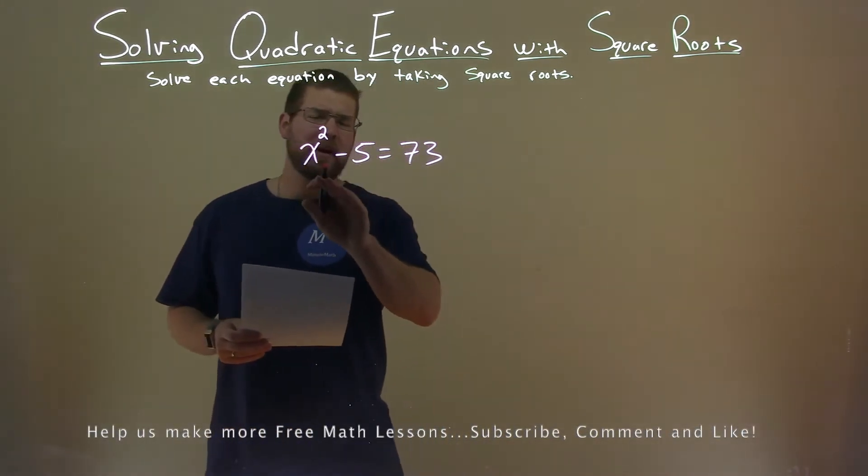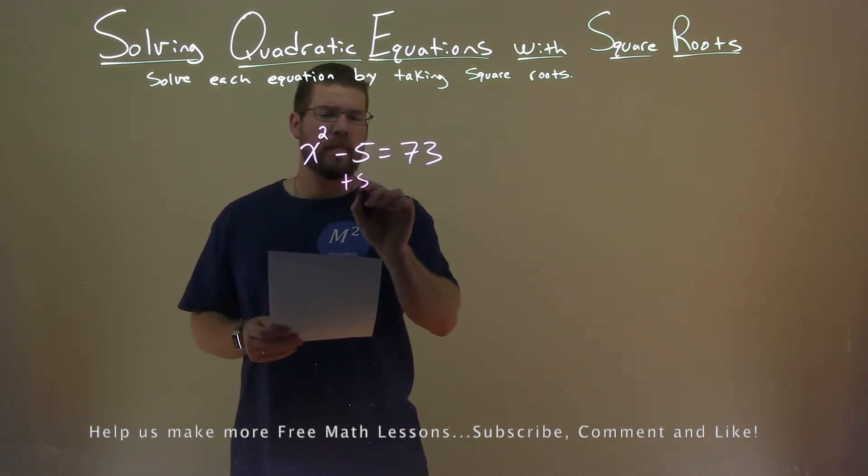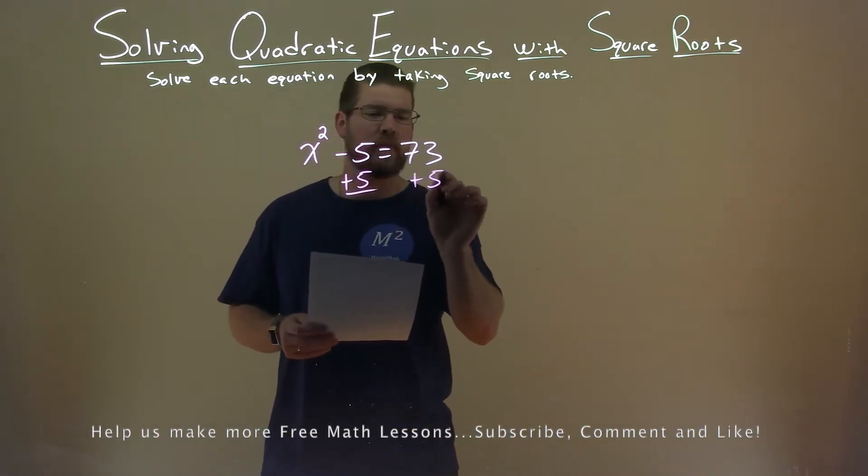Well, first thing, I want to get x squared by itself. So to do that, I have to add a 5 to both sides.